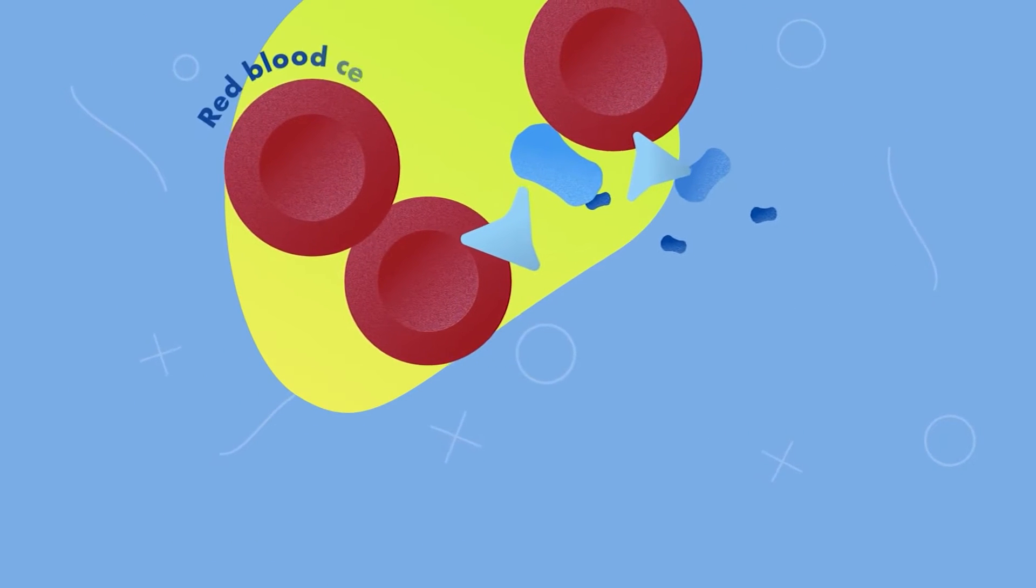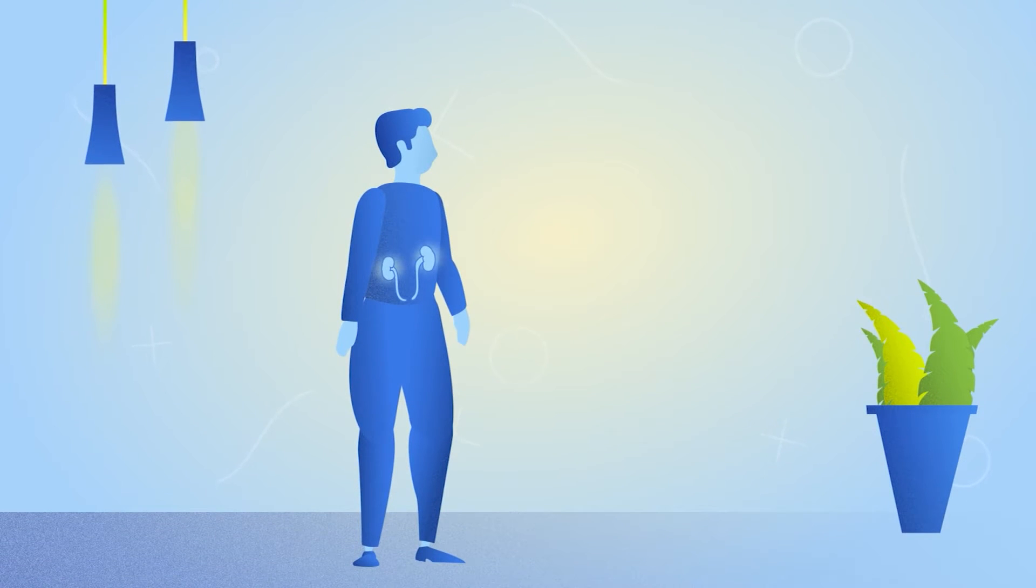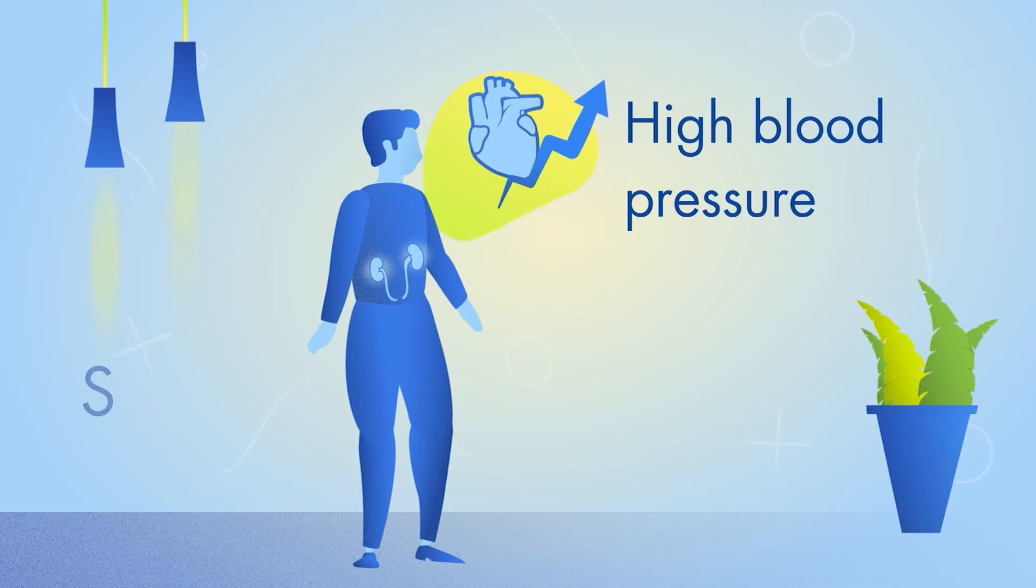At first, kidney damage can show up as blood and protein leaking in the urine. Damage can also appear as high blood pressure and swelling of the legs.